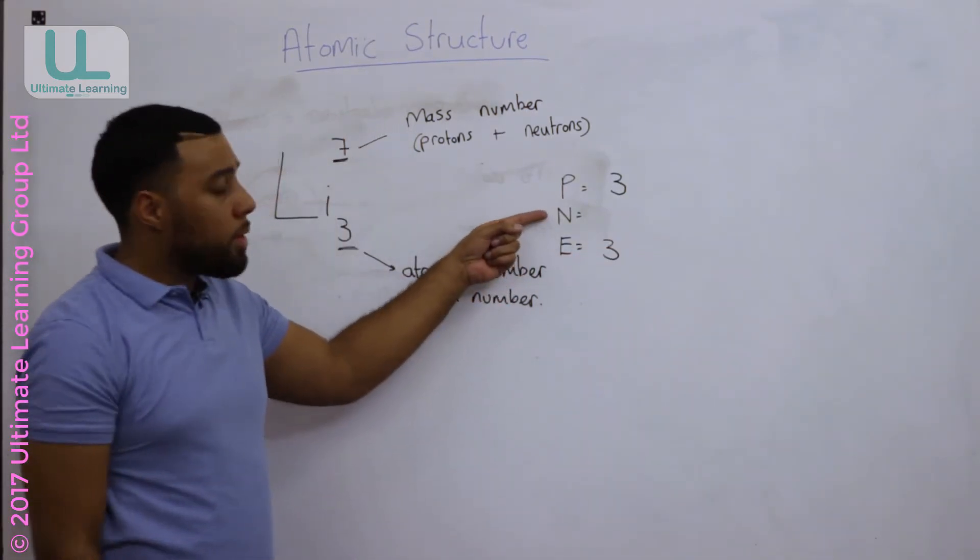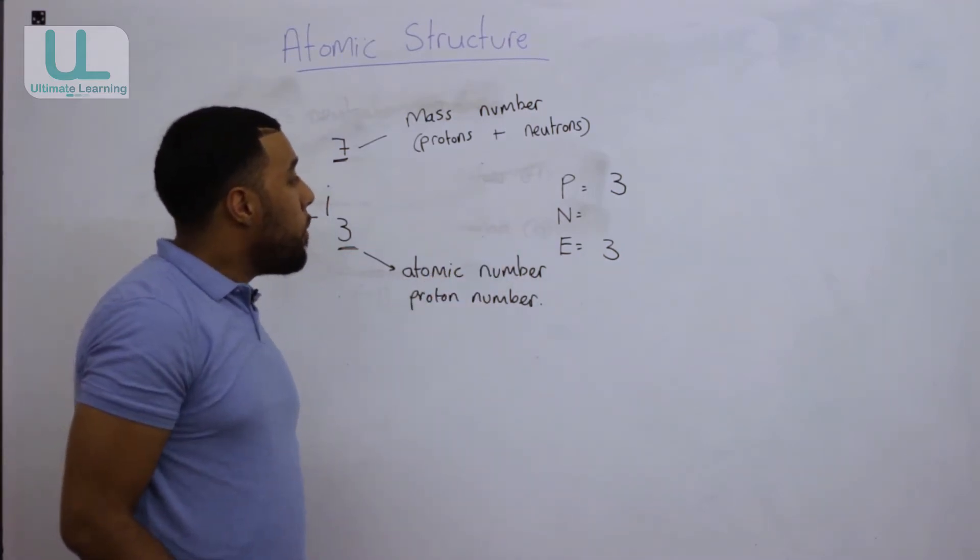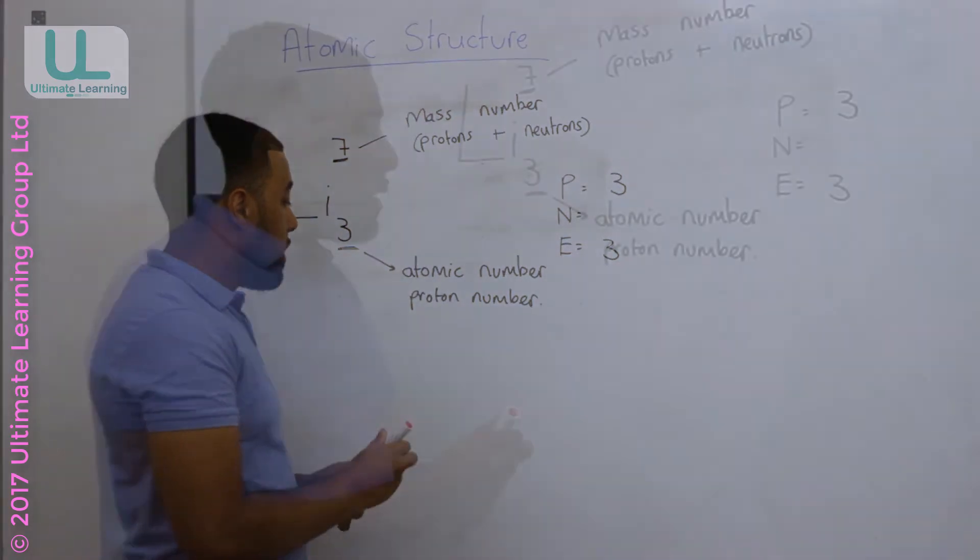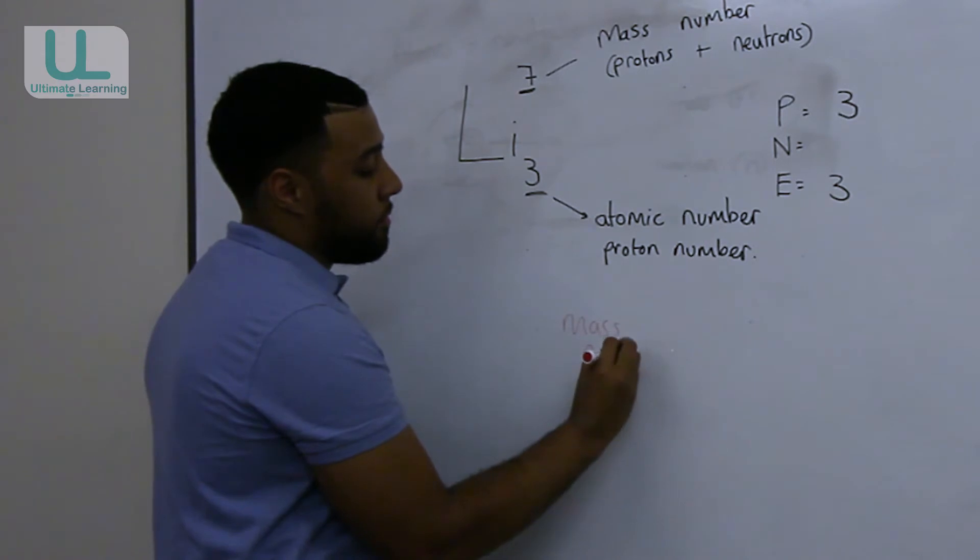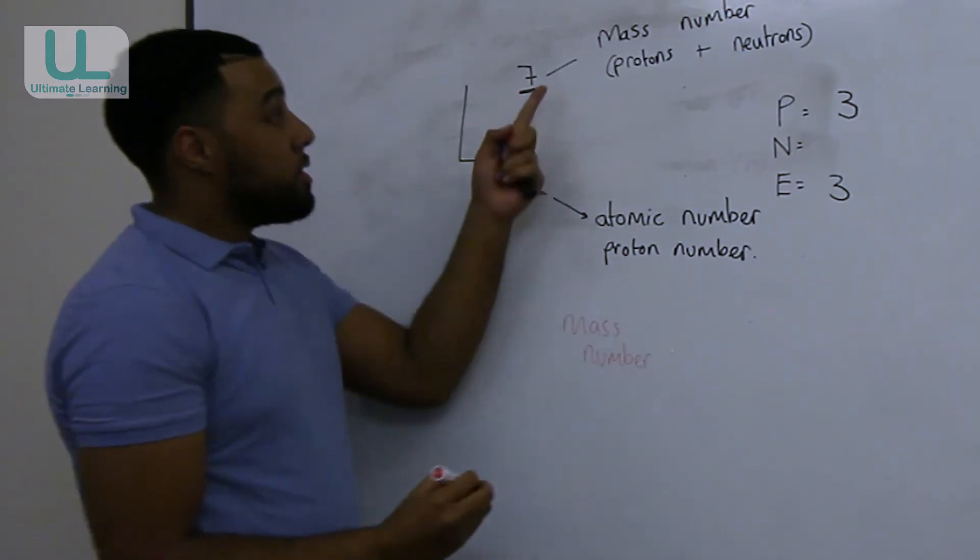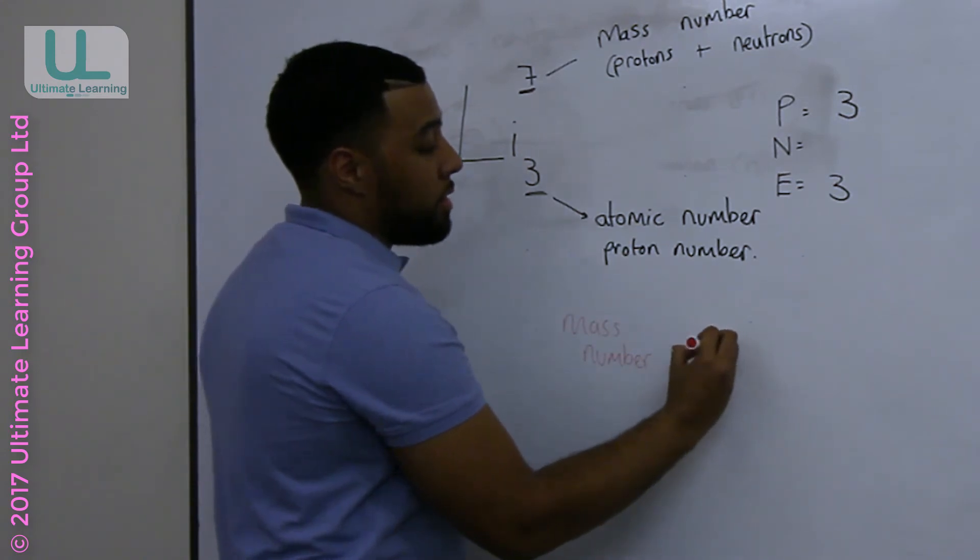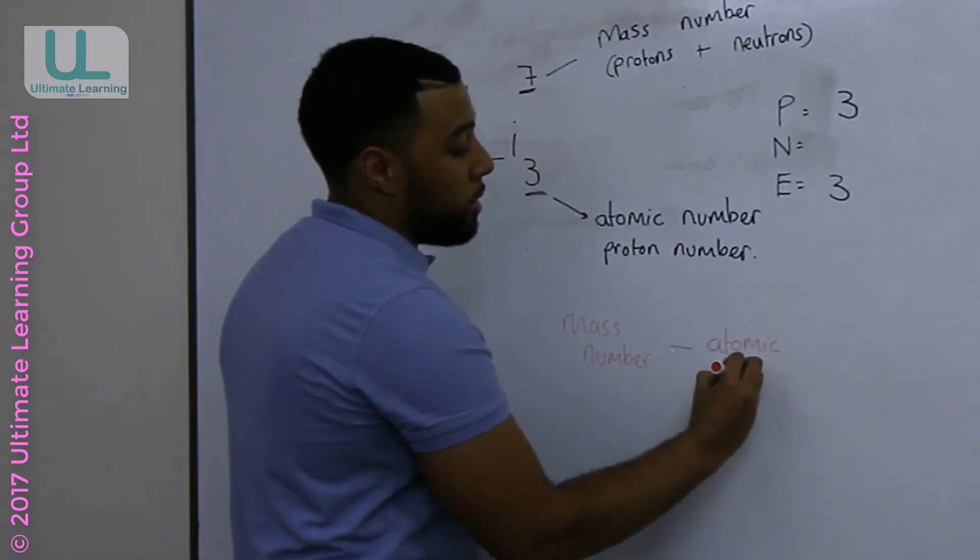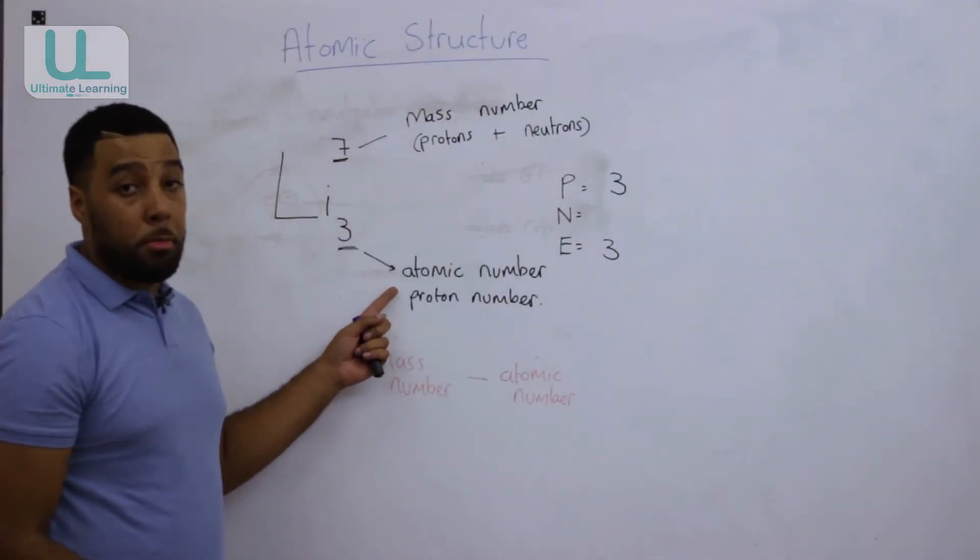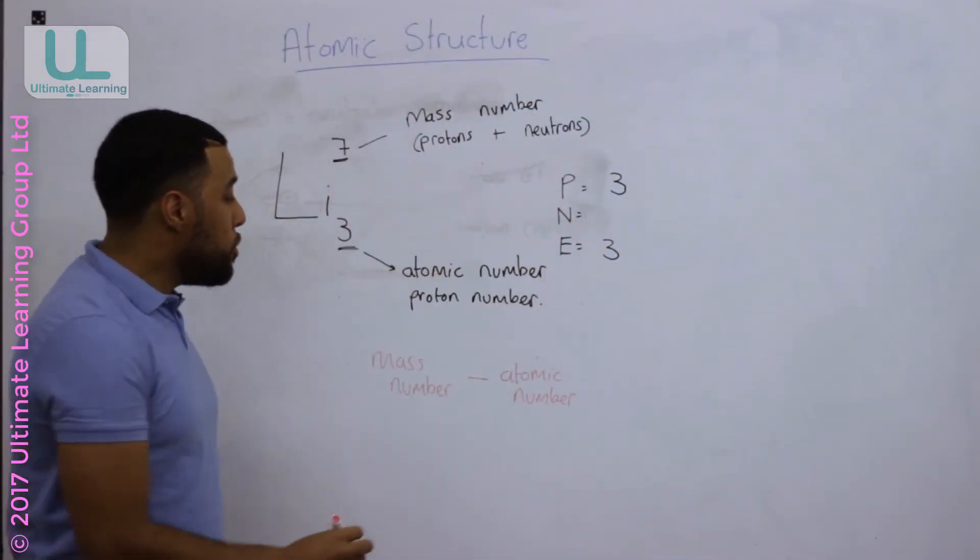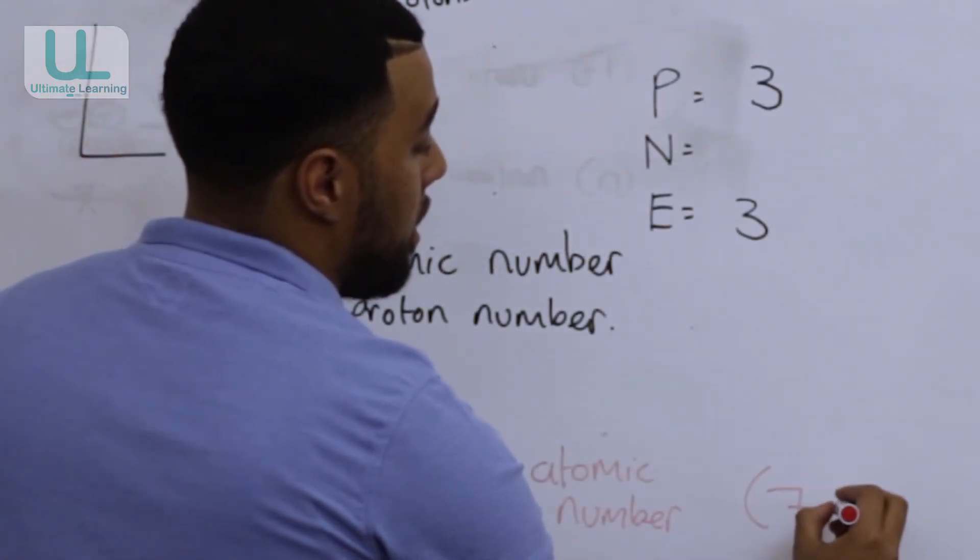But how would we calculate the number of neutrons? Well, in this example what we would need to do is the mass number, which is the number at the top, and we would minus the atomic number, which is the number at the bottom.